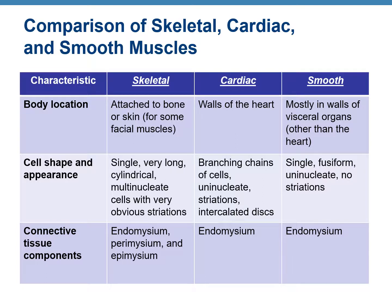This table is comparing the three types of muscles. Regarding body location, skeletal muscles are attached to the bones. Cardiac muscles are present in the heart wall, while smooth muscles are present in the walls of the hollow organs.